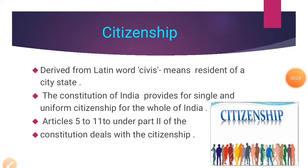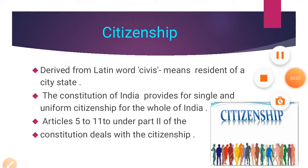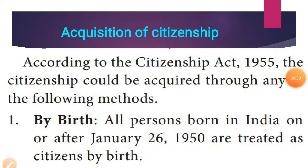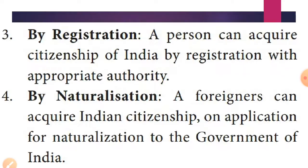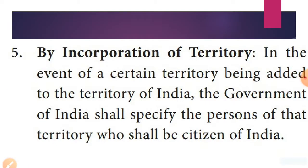Before entering into today's portion, let's recall our previous portion. In the last class we saw about citizenship — it is a Latin word which means resident of a city state. We can get citizenship of a country by 5 methods: by birth, by descent, by registration, by naturalization, and by incorporation of territory.